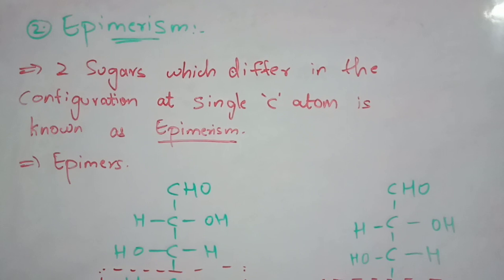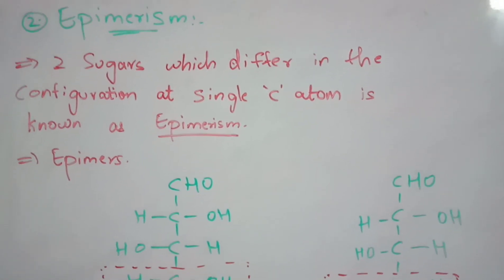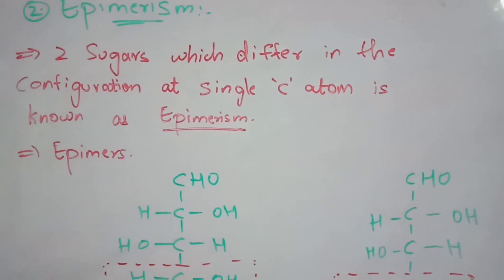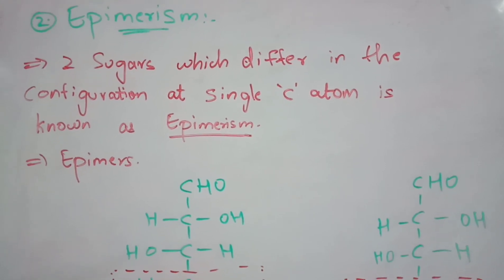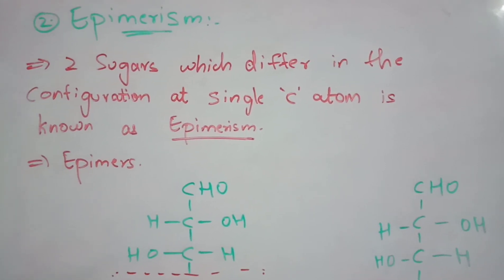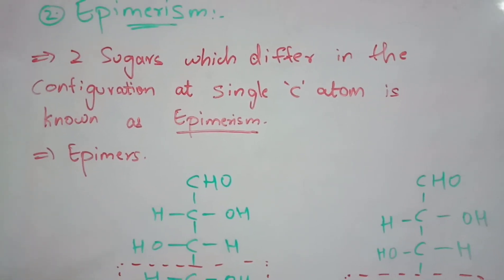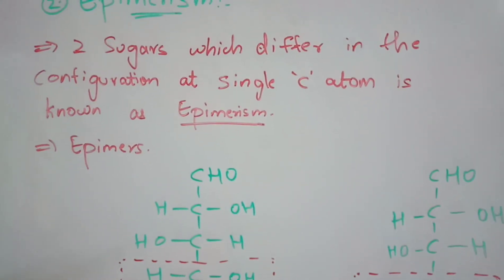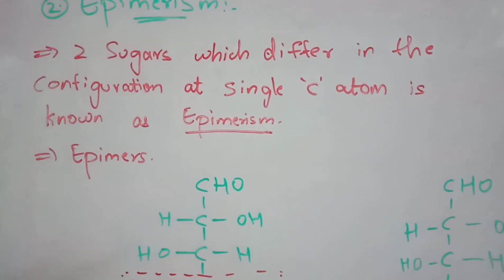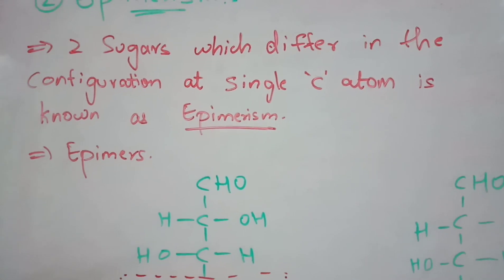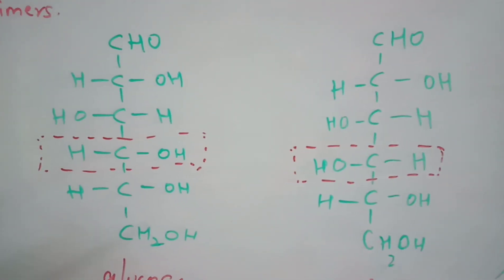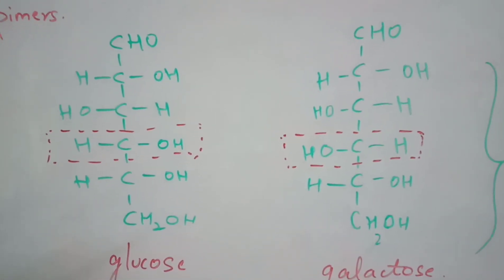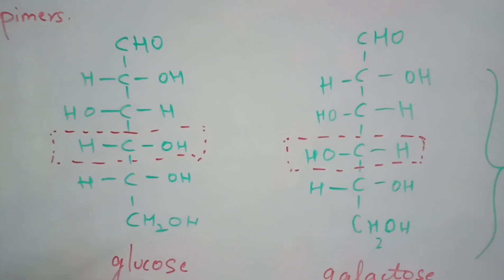Epimerism refers to two sugars — such as glucose, galactose, mannose, or fructose — that differ in configuration at a single carbon atom. The compounds that exhibit this phenomenon are known as epimers. The best example is glucose and galactose: glucose has six carbons and galactose also has six carbons.